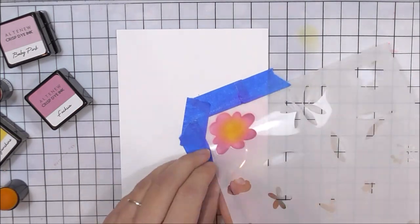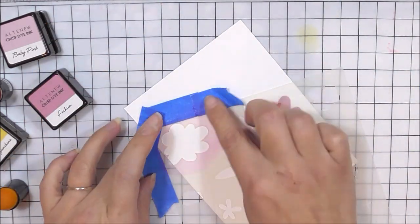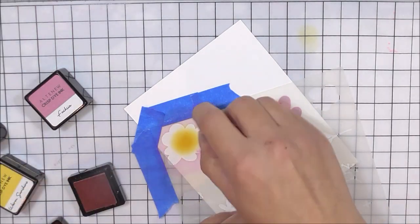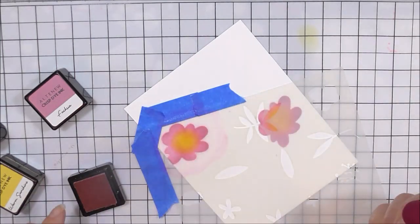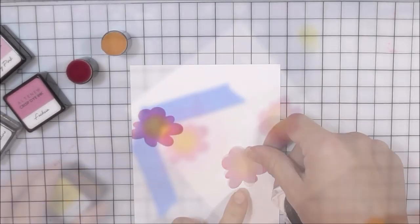Once I've done that I can remove the stencil. I'm not going to clean it this time and then I'm just going to pop it back into place where I want it to be and I'm going to do it exactly the same again. So the warm sunshine for the center, the baby pink for the petals and then darken those edges of those petals with the fuchsia.